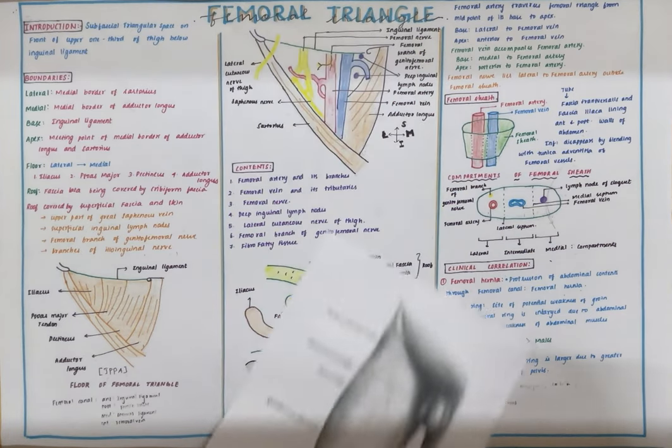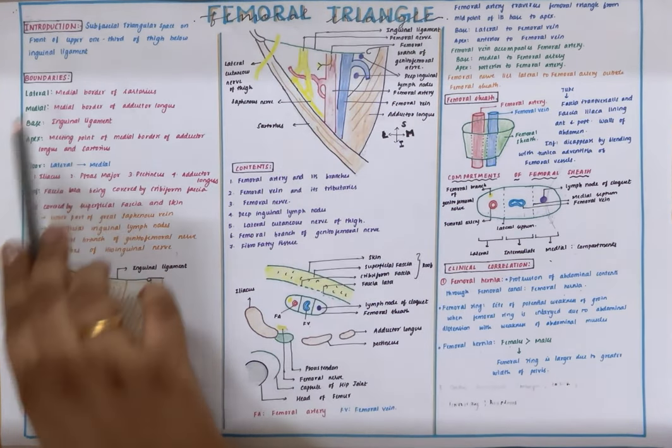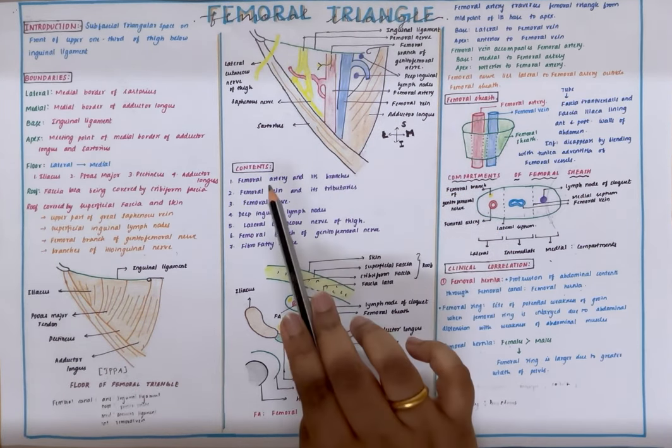The femoral triangle is an inverted triangle with the apex below and base above. The boundaries of the femoral triangle are lateral border, medial border, apex space, floor, and roof.